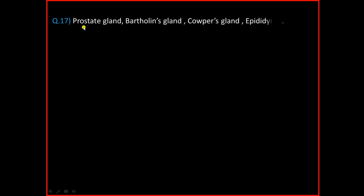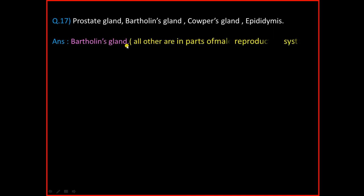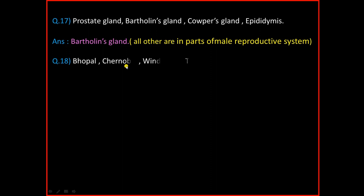Question Number 17: Prostate Gland, Bartholin's Gland, Cowper's Gland, Epididymis. And the answer is Bartholin's Gland. The reason is all others are parts of the male reproductive system.